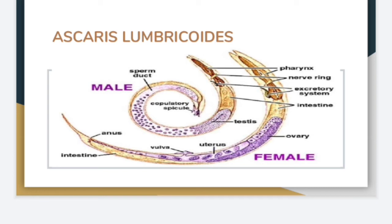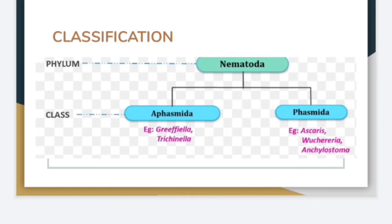To summarize: in the male, the digestive and reproductive systems share a common opening called the cloaca, while in the female the digestive system opens at the anus and the reproductive system opens at the genital pore. Internally, males have one set of reproductive organs — the monorchic condition — and females have two sets — the didelphic condition.